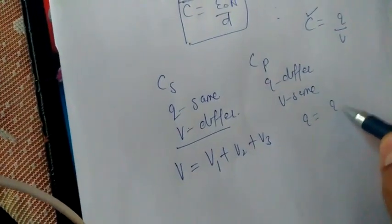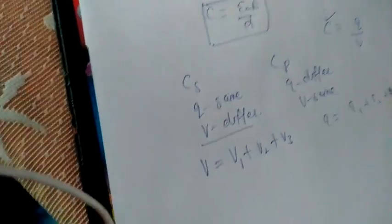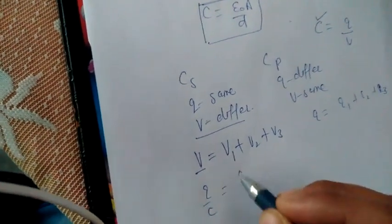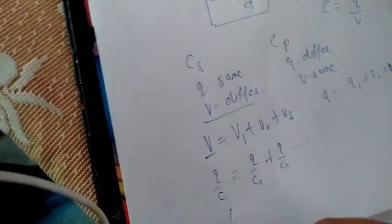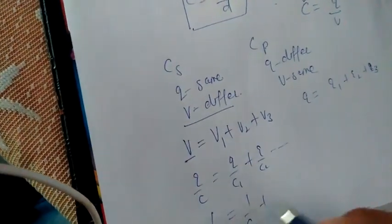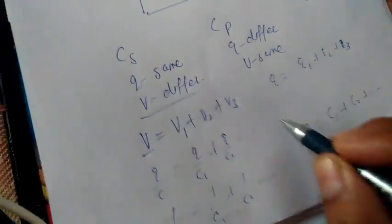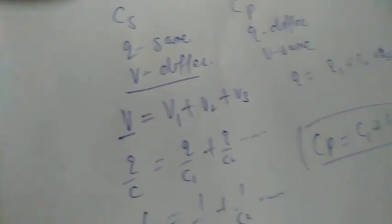And in parallel, total charge equal to Q1 plus Q2 plus Q3. Therefore, what is the V? V equal to Q over C. What is V1? Q over C1, Q over C2. Therefore, 1 over C equal to 1 over C1, 1 over C2. This is the series result. And in parallel, we get the result like this. Therefore, we can derive any formula if we know the basic concept behind that formula.